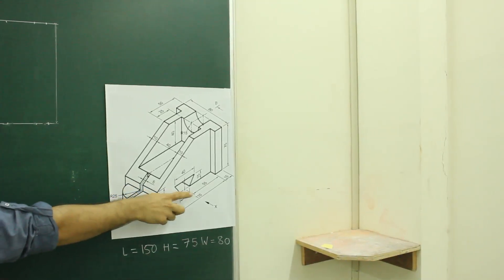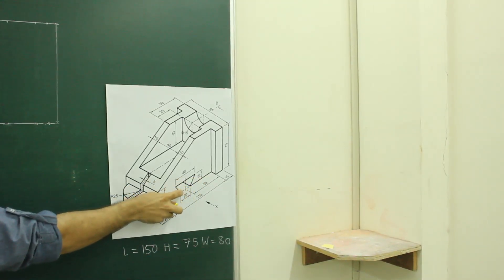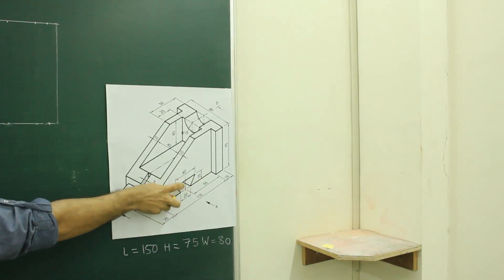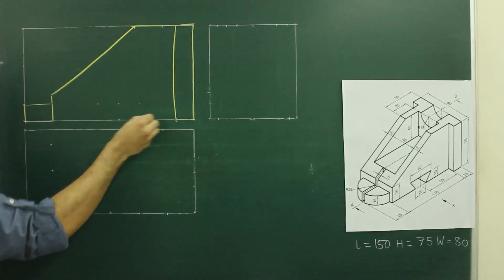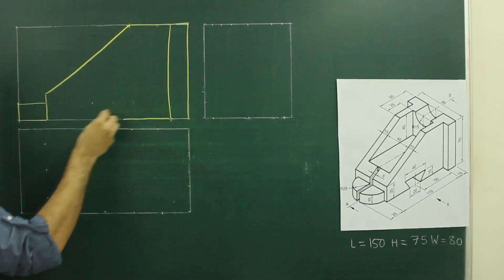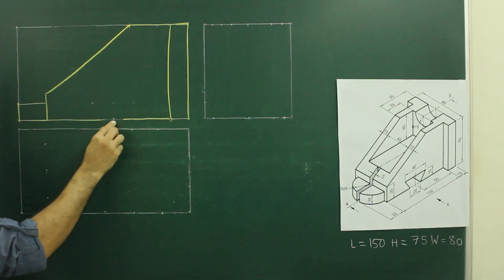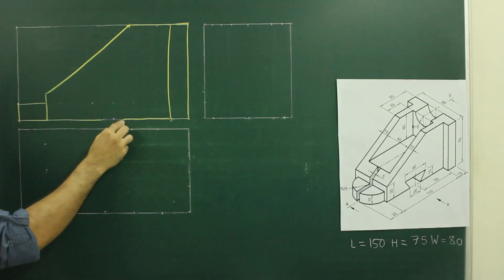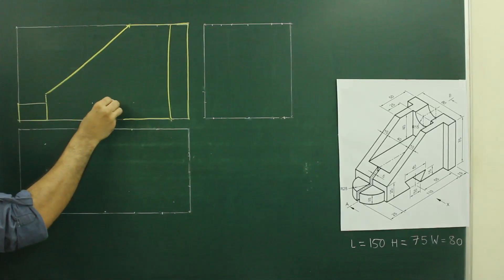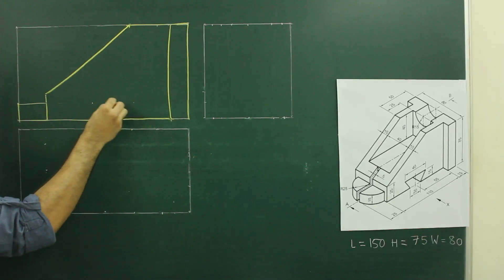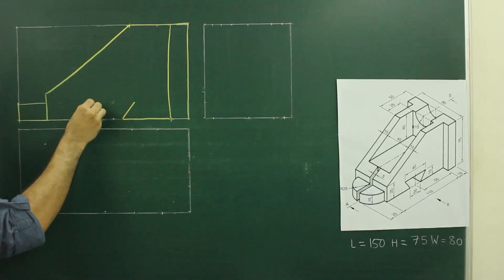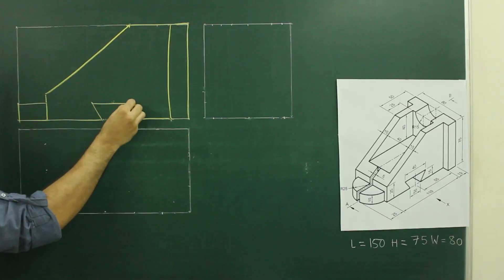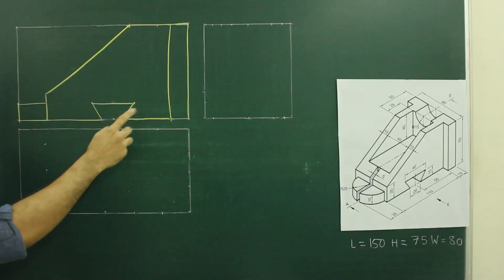If you see the main diagram, they have given 55 from here, then 10, then go up by 15, again 20 and 20. So we'll draw this part: we'll take 55 from here and leave 10 on both sides, again go up by 15 and leave 20 on both sides, and join.